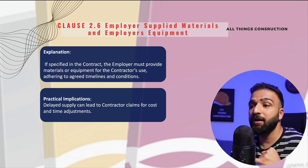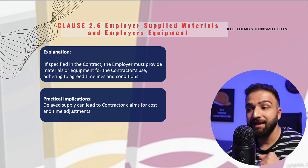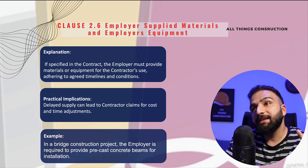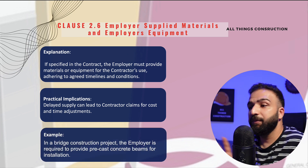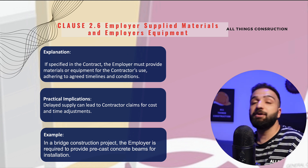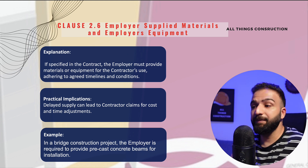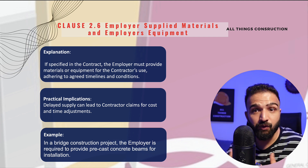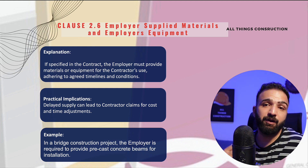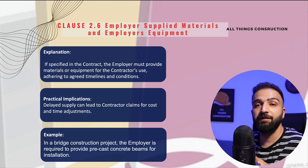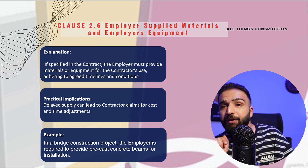For example, in a bridge project, the precast concrete beams for installation are to be supplied by the employer. Due to logistical issues, the beams are delivered two weeks late, delaying the contractor's schedule. As a result, the contractor will submit claims under Clause 20.1 and a few other clauses of the Red Book.